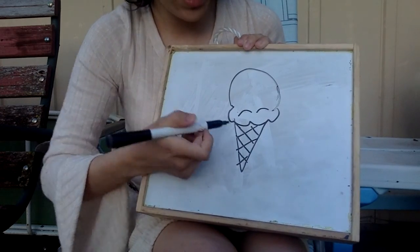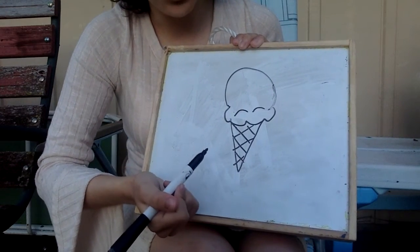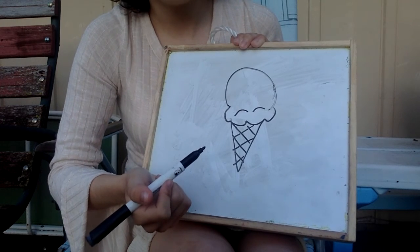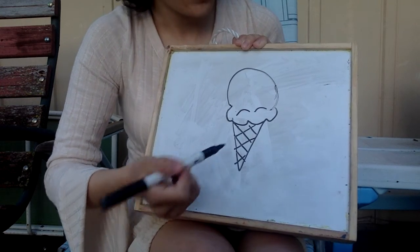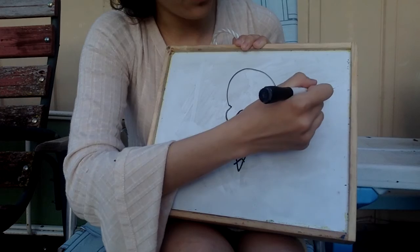To make it 3D, we're going to come in and add shadows. The shadows depend on where the light is. I'm going to pretend the light is over here.